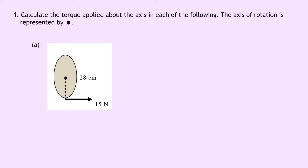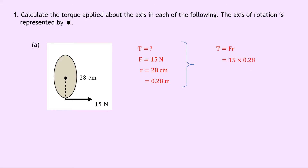Question one says to calculate the torque applied about the axis in each of the following. The axis of rotation is represented by the black dot. For part A, we have a force of 15 newtons applied at a distance of 28 centimetres from the axis of rotation. The force is perpendicular, so we write T equals F times R. Converting 28 centimetres to 0.28 metres and substituting gives us 15 times 0.28, which equals 4.2 newton metres.